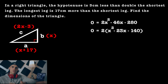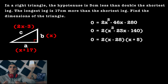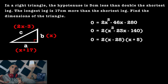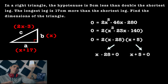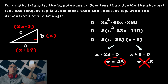At this point we just have a quadratic to solve. We can factor out a 2, and then factor the remaining quadratic in the brackets. That gives 0 equals 2 times (x minus 28)(x plus 5). Setting each factor equal to zero, we get x equals 28 or x equals negative 5. But since x is the length of the shortest leg of a triangle, it can't be negative, so we disregard x equals negative 5.